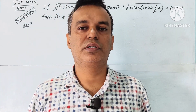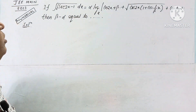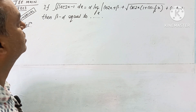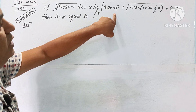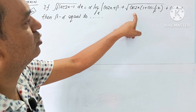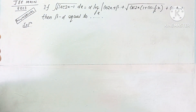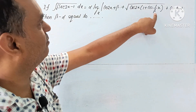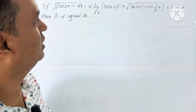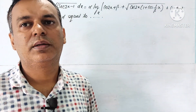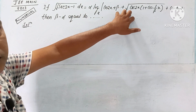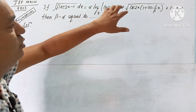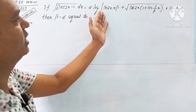Hello, this video is for a JEE 2023 indefinite integral problem. We need to integrate √(sec2x - 1) dx, which equals α·log_e(cos2x + β + √cos2x) · (1 + cos βx) + constant. We need to find β - α and α separately. The challenge is not just integrating, but writing the answer in the given form and comparing to find α and β.